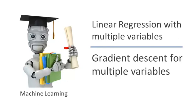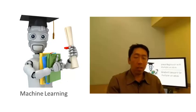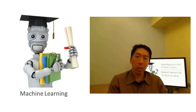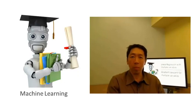In the previous video, we talked about the form of the hypothesis for linear regression with multiple features, with multiple variables. In this video, let's talk about how to fit the parameters of that hypothesis. In particular, let's talk about how to use gradient descent for linear regression with multiple features.